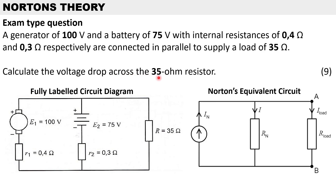Calculate the voltage drop across the 35 ohm resistor for a total of 9 marks. If you are asked to draw the fully labelled circuit diagram, you need to draw the electrical circuit diagram as you read it in the exam question. We have a generator of 100 volts with an internal resistance of 0.4 ohms connected in parallel to a battery of 75 volts and internal resistance of 0.3 ohms, and these are connected in parallel to a load resistor of 35 ohms.